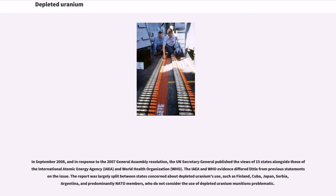In September 2008, in response to the 2007 General Assembly resolution, the UN Secretary-General published the views of 15 states alongside those of the International Atomic Energy Agency (IAEA) and World Health Organization (WHO). The IAEA and WHO evidence differed little from previous statements on the issue. The report was largely split between states concerned about depleted uranium's use — such as Finland, Cuba, Japan, Serbia, and Argentina — and predominantly NATO members, who do not consider the use of depleted uranium munitions problematic.